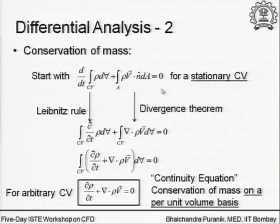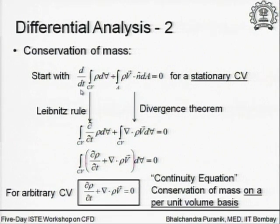How many of you have heard the term 'differentiation under integral sign' in the Applied Mathematics class? I think that is how it is popularly known. The Leibniz rule is many times popularly known as DUIS — differentiation under integral sign. If you have not seen it, it does not matter; it is a pretty straightforward expression from calculus. What it does is: you have a time derivative of an integral. As long as we are dealing with a stationary control volume, using the Leibniz rule you can bring this time derivative, which is standing outside the integral, inside the integral. The only thing is that in that case it becomes a partial derivative with respect to time.